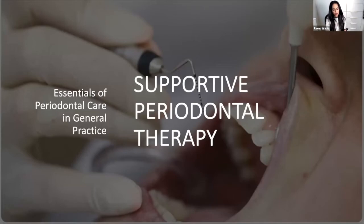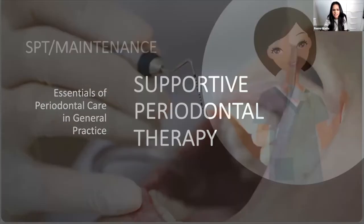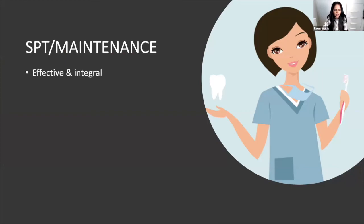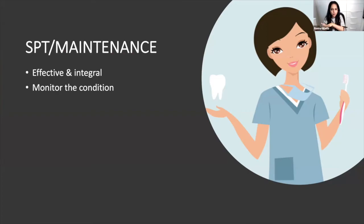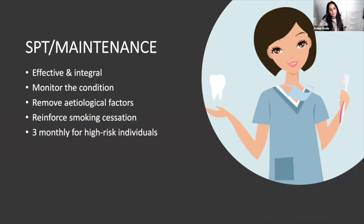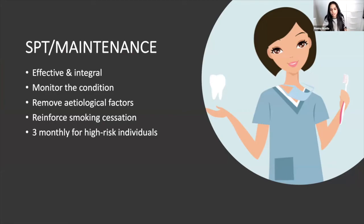Once your patient has had treatment and is healthy, put them on a supportive periodontal therapy program — the updated correct term rather than 'maintenance.' This must be on your treatment plan from the very beginning. Three-monthly intervals are the default for most patients, but tailor accordingly: four months if well controlled with good oral hygiene; two months if poorly controlled diabetes, smoking, and poor oral hygiene interest. Adjust and keep them on your own recall.